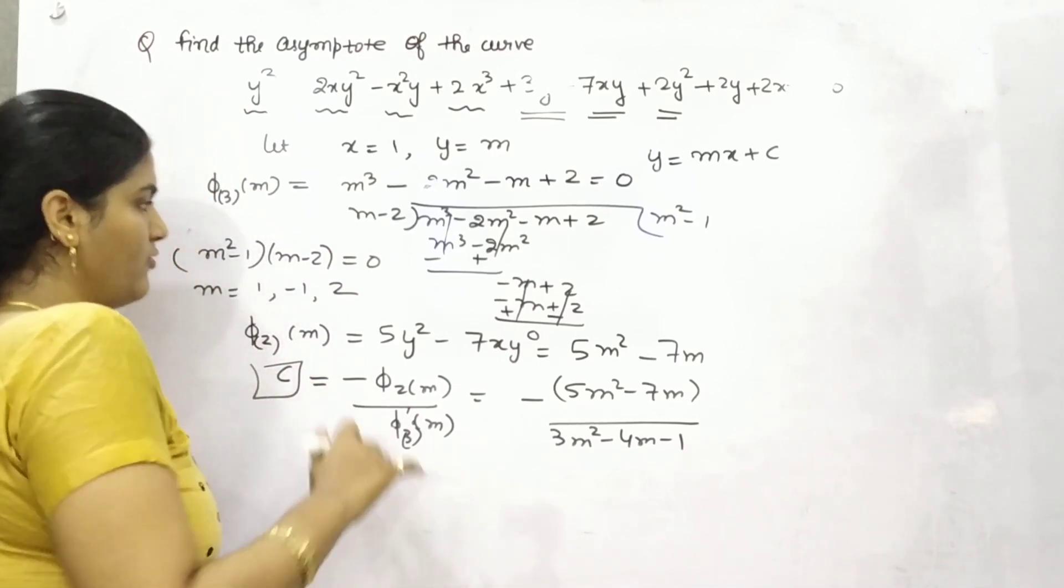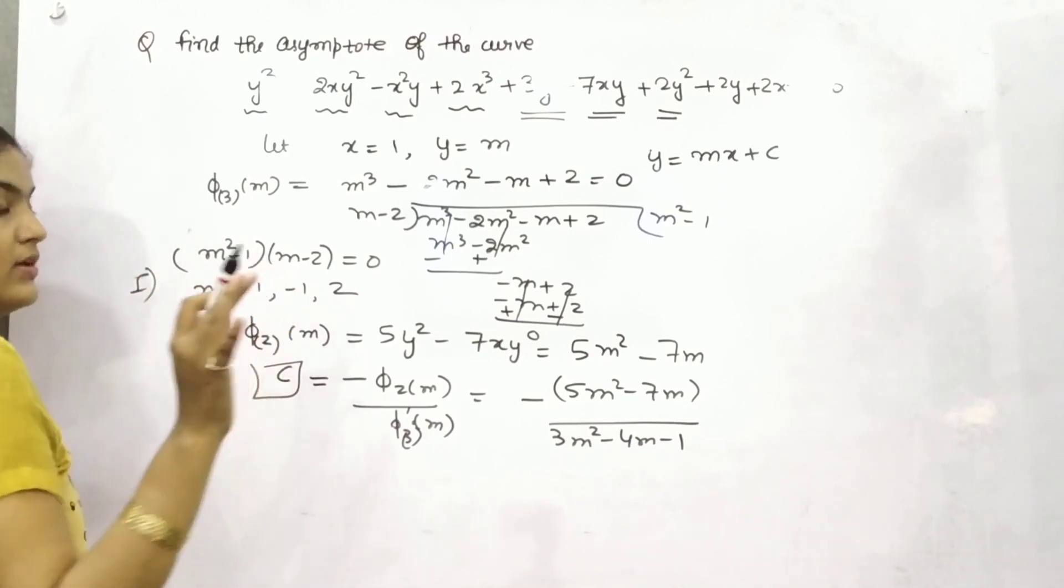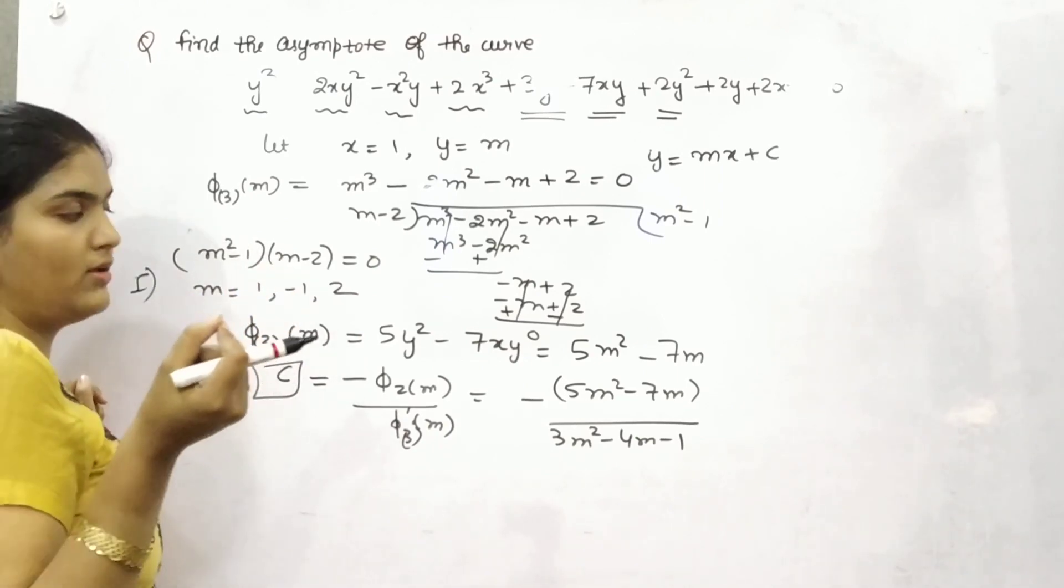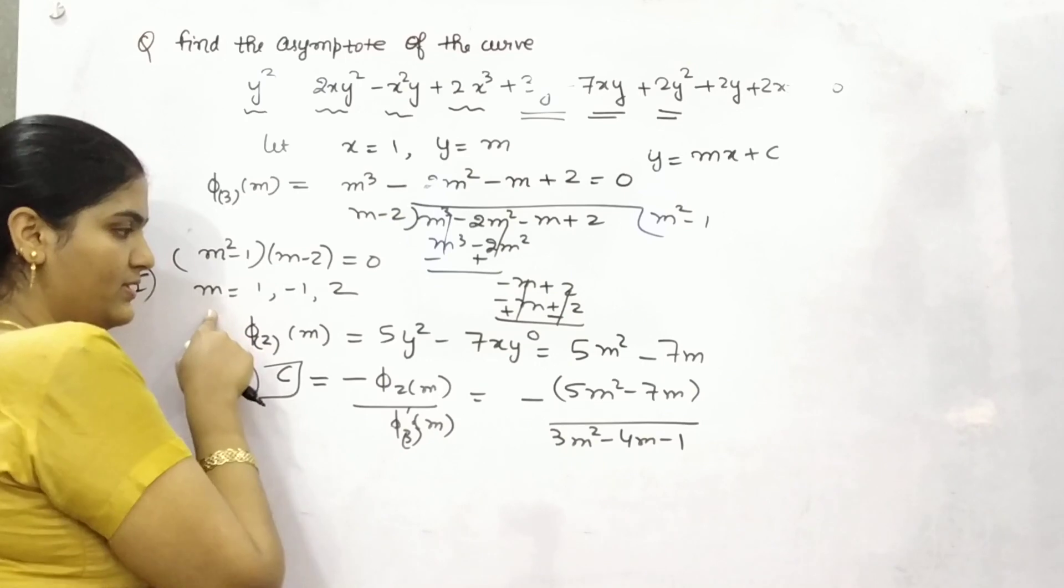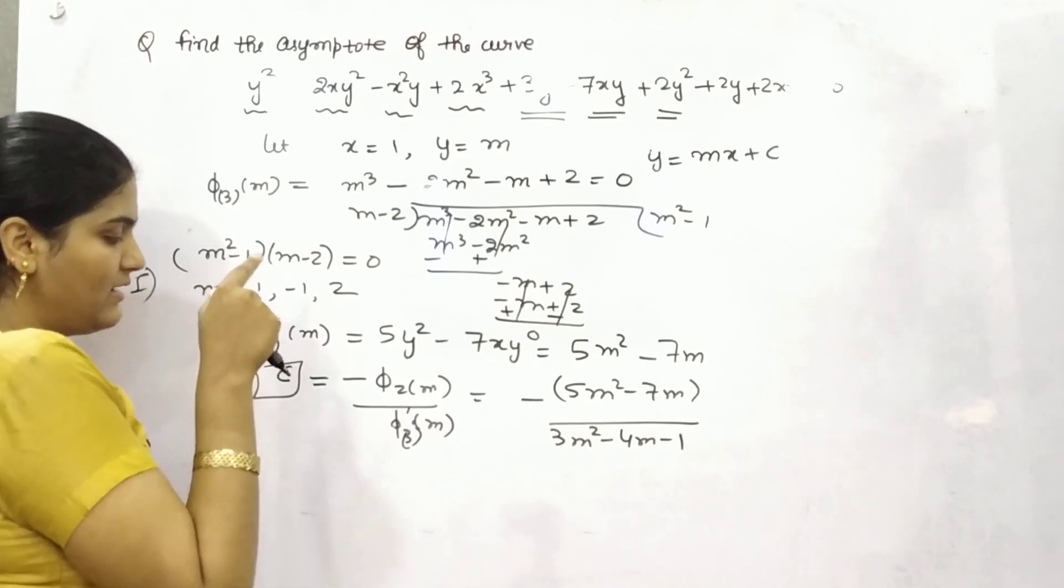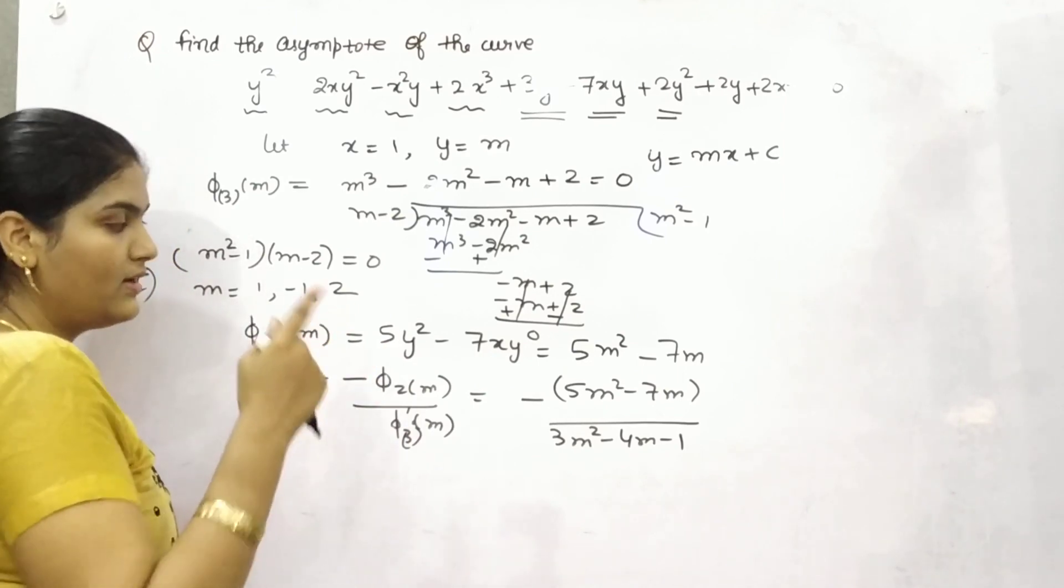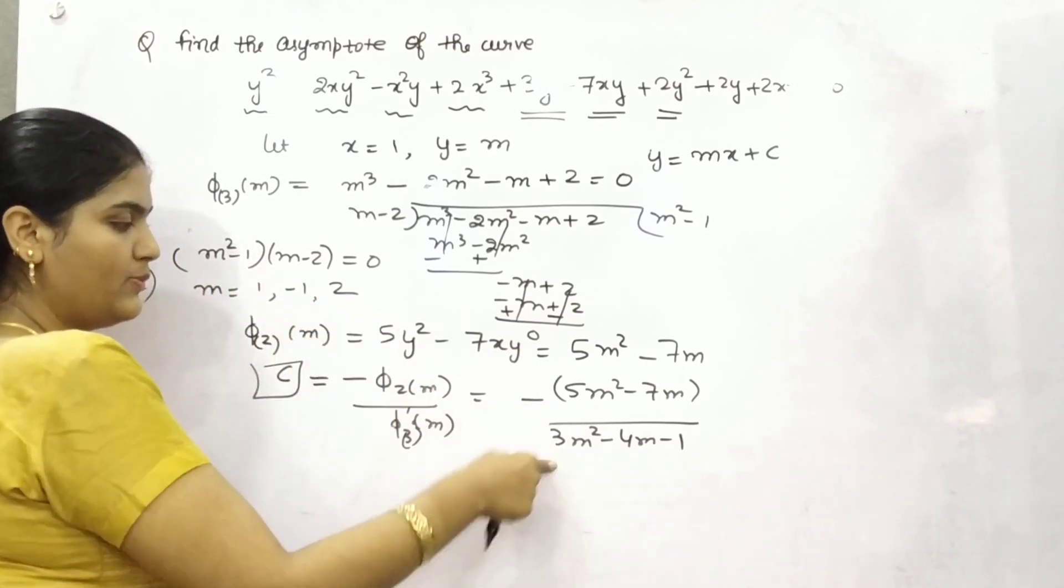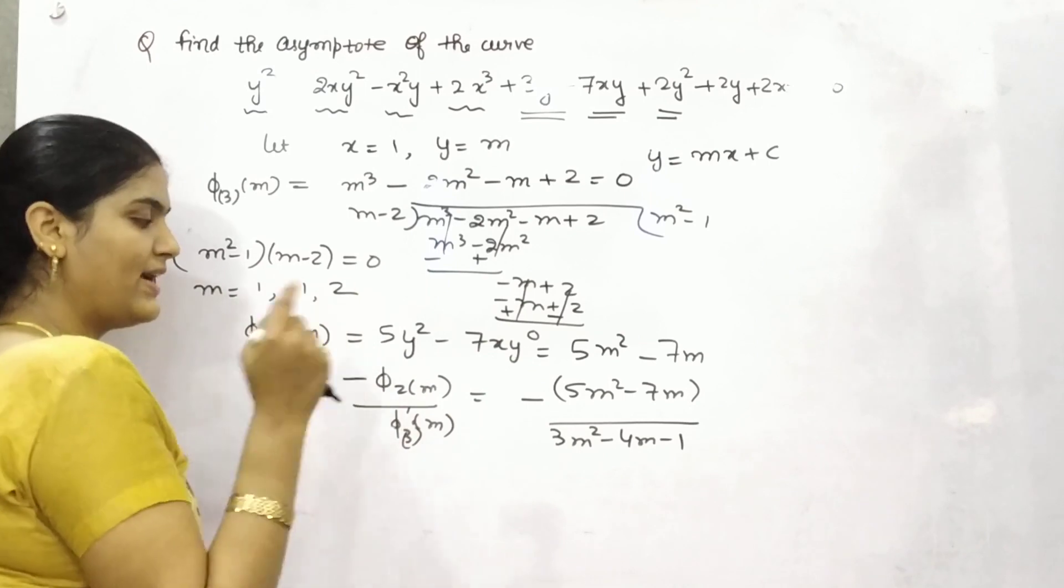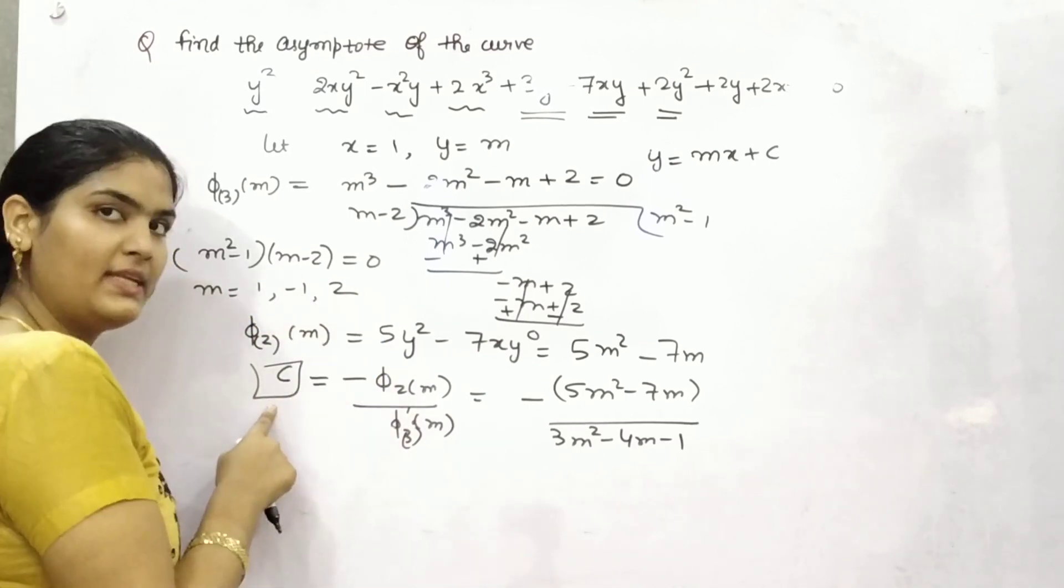Now what you need to do, the last step. First step was to find out the value of m. Thereafter, find out value of c by taking this. And thereafter, put all these values one by one into this and find out 3 different values of c.